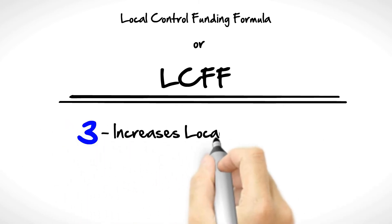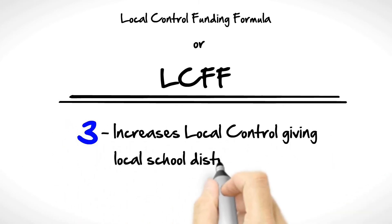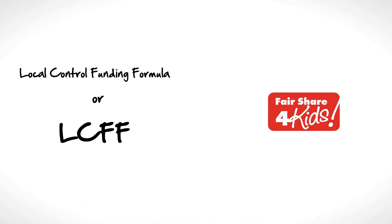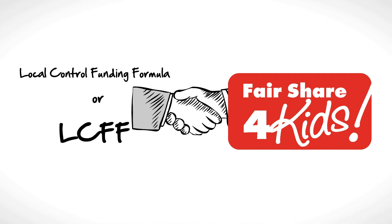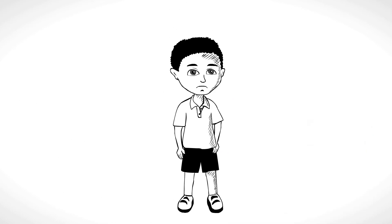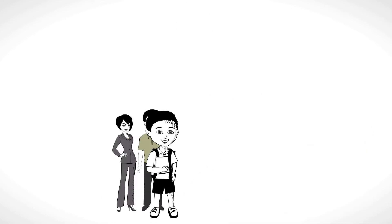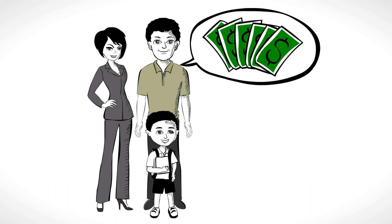3. Increases local control, giving local school districts more options on how to best use funds. Fair Share for Kids supports this plan so long as low-income students receive the support they need and parents have a voice on how monies are spent.